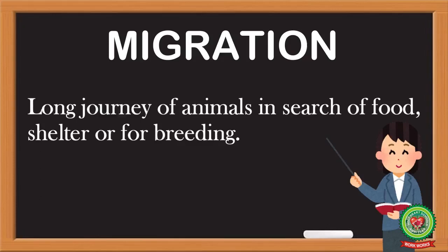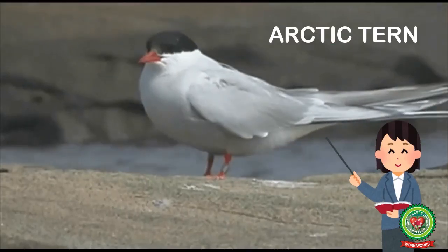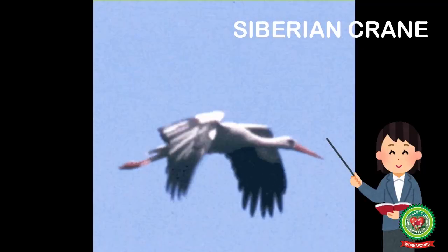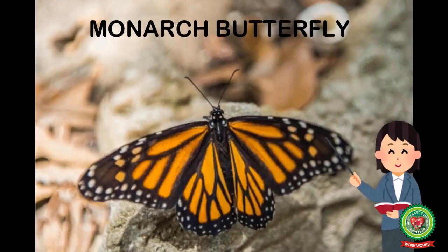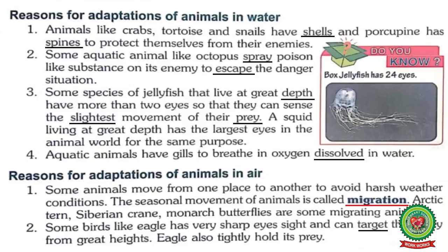Examples of migrating animals are Arctic tern, Siberian crane, and monarch butterflies. Some birds, like the eagle, have very sharp eyesight and can target their prey from great heights. Underline the word 'target' and write down its meaning: the organism selected as the aim to attack.